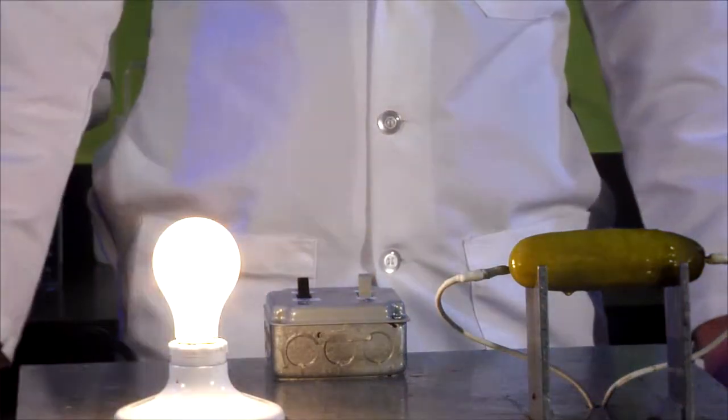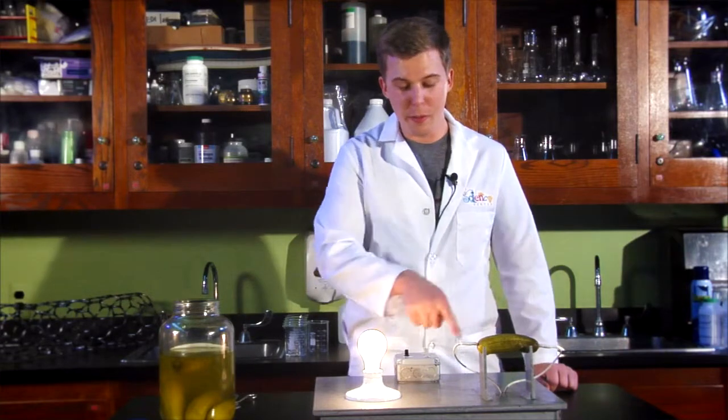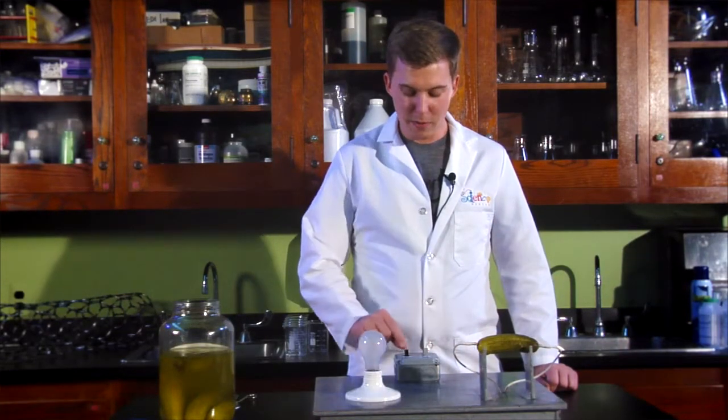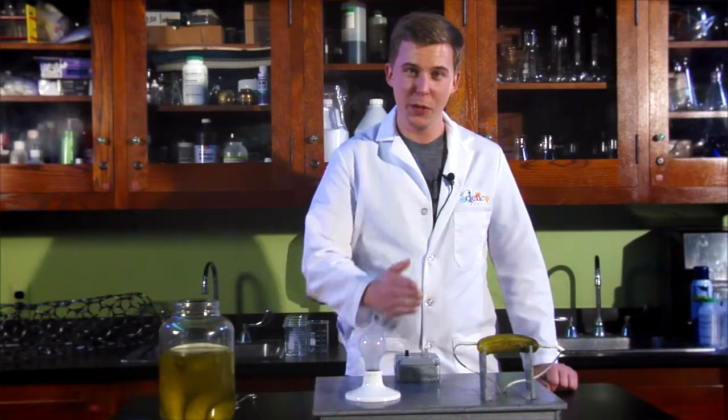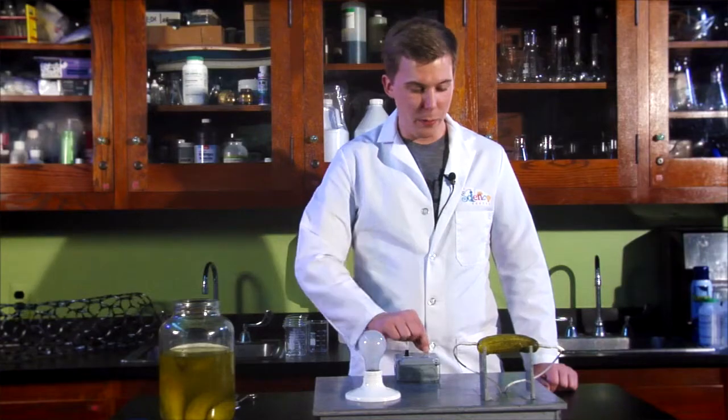We'll go ahead and turn on the electricity and our light bulb lights up. Electricity is flowing through the pickle, lighting up our light bulb. Now, when we turn it off and flip our pickle switch, we've removed the light bulb from the circuit and now our pickle will glow.